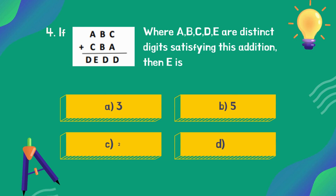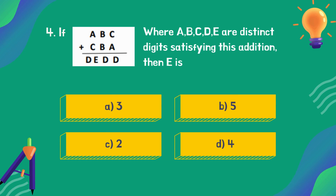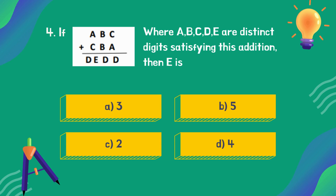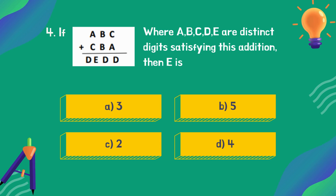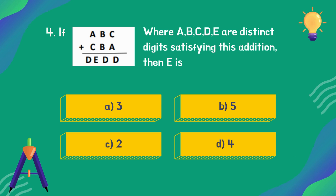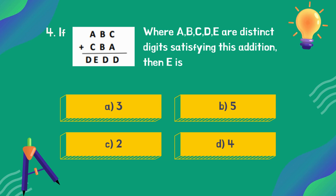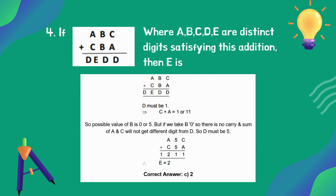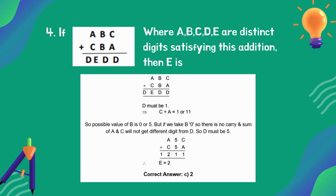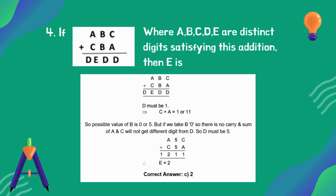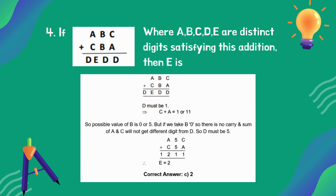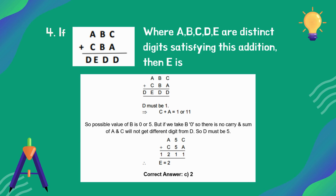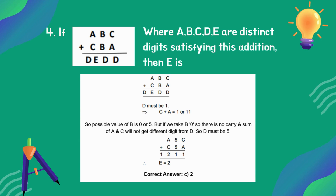Where A, B, C, D are distinct digits satisfying a given addition, then what is E? The correct answer is option C: 2.